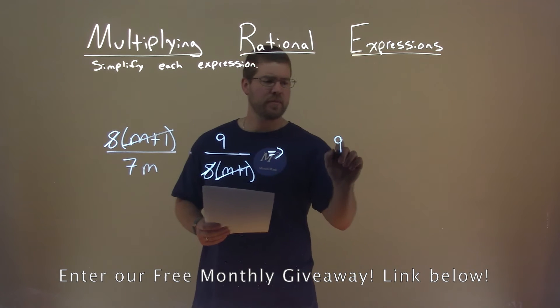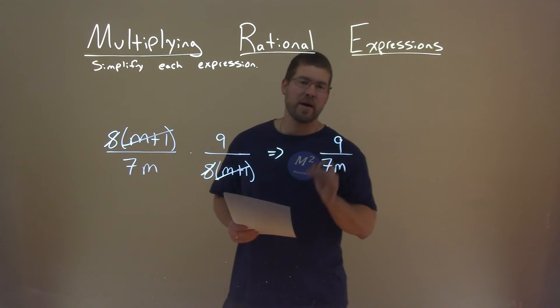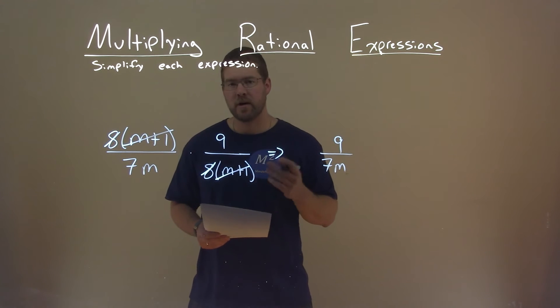So we bring the 9 over, we bring the 7m over in the denominator, and that's it. 9 divided by 7m is our final answer.